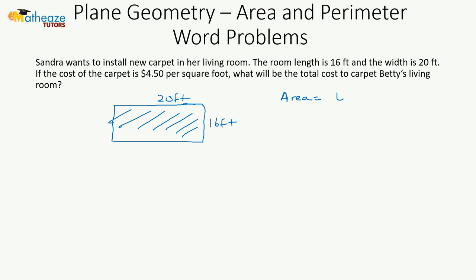Area equals length multiplied by width, which is 20 multiplied by 16, and that gives us 320 square feet. Now we are told that one square foot costs $4.50.